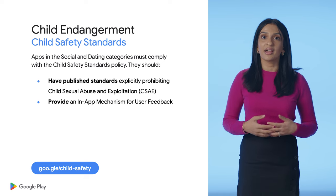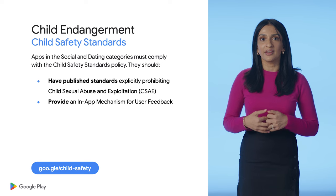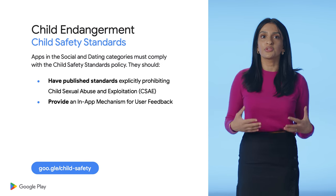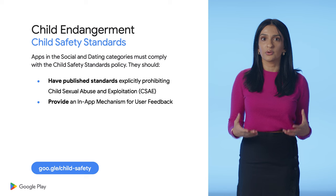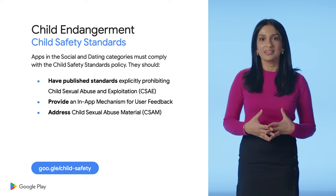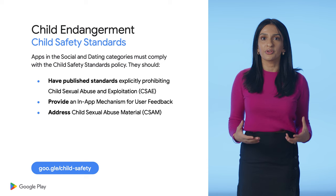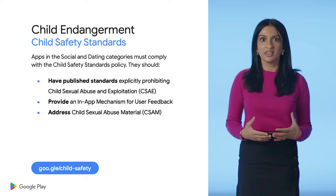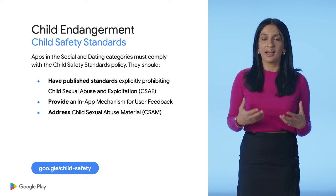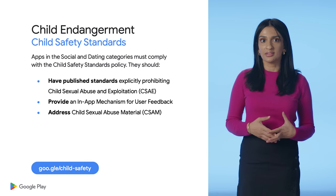Second, provide an in-app mechanism for user feedback. You must self-certify that you provide a mechanism within your app for users to submit feedback, concerns, or reports in your app. Third, address CSAM. You must self-certify that your app takes appropriate action, including but not limited to, removing CSAM after obtaining actual knowledge of it in accordance with your published standards and relevant laws.